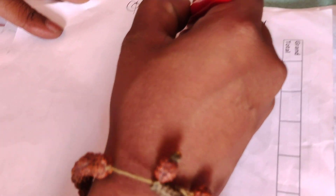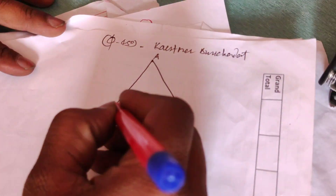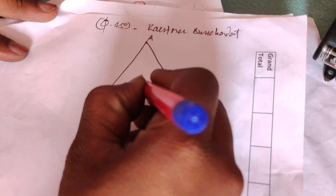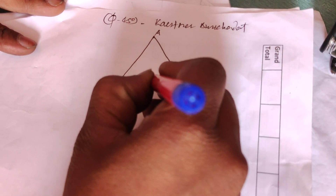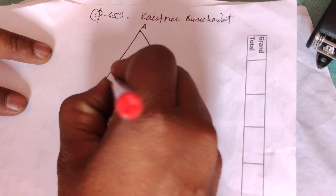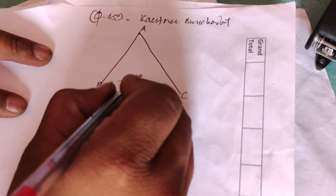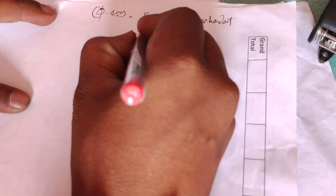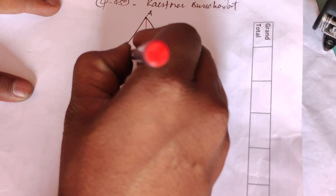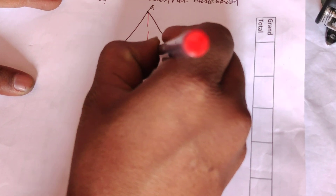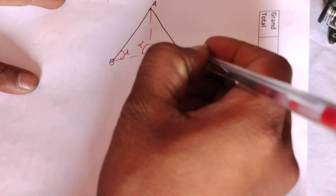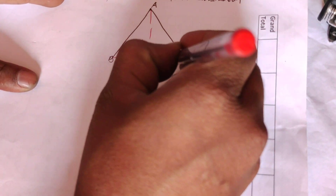Now, you can use points A, B, and C. It's simple. You can use a point inside the triangle and locate the angles. This means alpha, this means beta. This angle is x, and this angle is y.